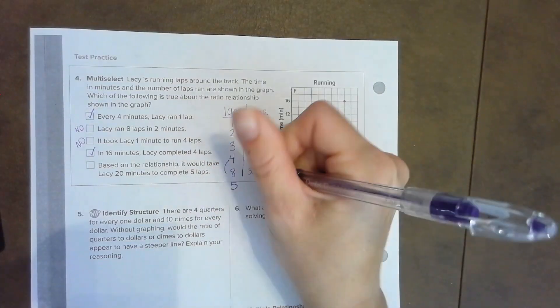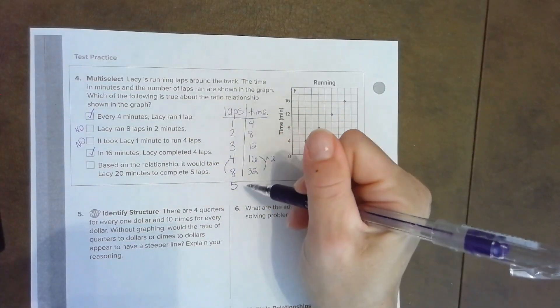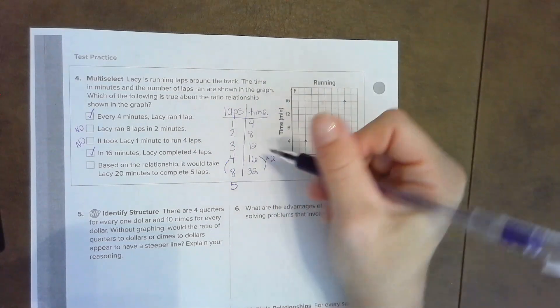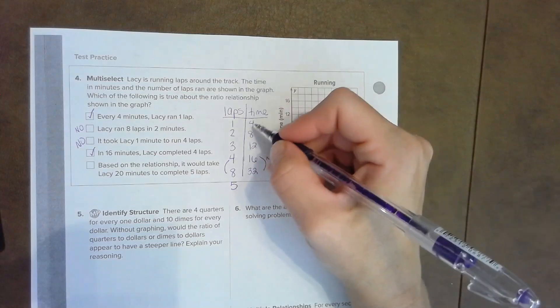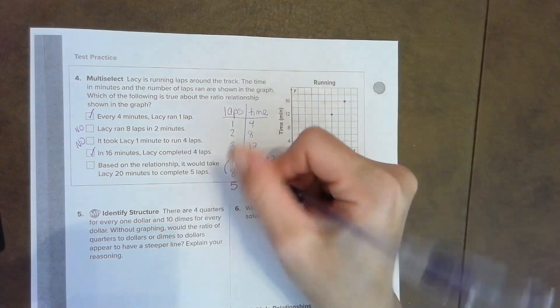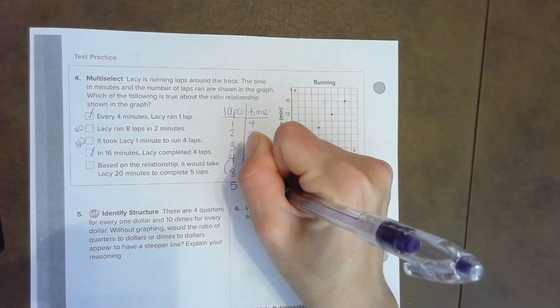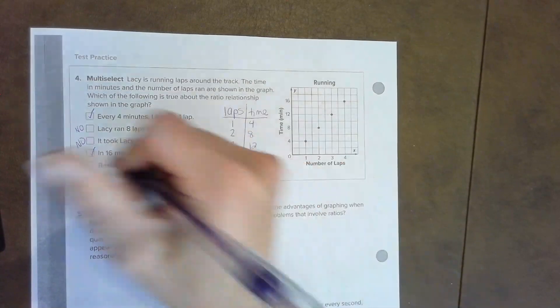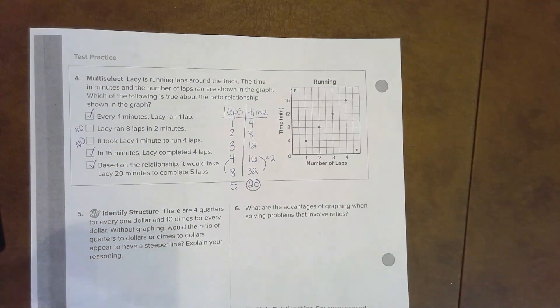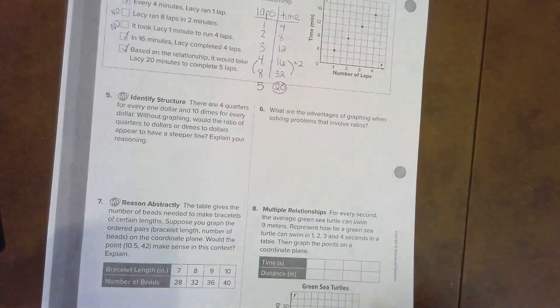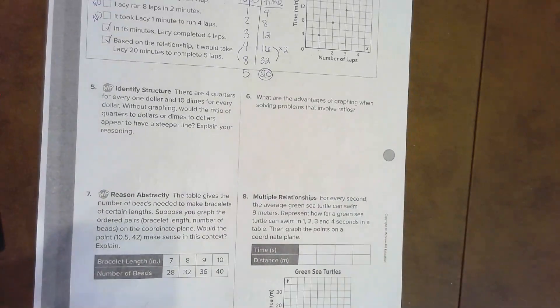Based on the relationship, it would take Lacey 20 minutes to complete five laps. Well, I'm not sure about that, so let's just double-check. Let's put five in our table, even though now we're starting to get out of order. But here, if I go one, two, three, four, and I would have went in order five, it would be four, eight, twelve, sixteen, and then this would be twenty. Is that correct? Yes, it is.